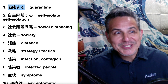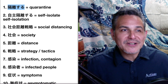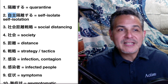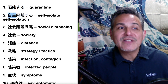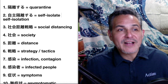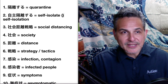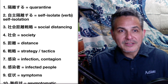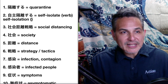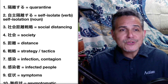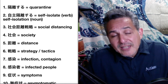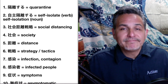Number two: in Japanese it's very similar, you have the same root there, but in English we say self-isolate. Self-isolate is the verb, and the noun is self-isolation, but we usually use it as a verb. Self-isolate — and that's basically to be alone.